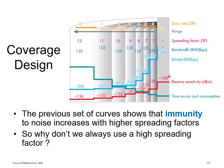This is a typical LoRaWAN performance graph. When your device is very close to the gateway, you can transmit at a bit rate of around 50 kbps. As you travel further from the gateway, your data rate decreases significantly, reaching as low as 292 bits per second at the far edge — due to reduced received power.